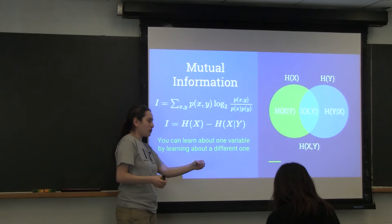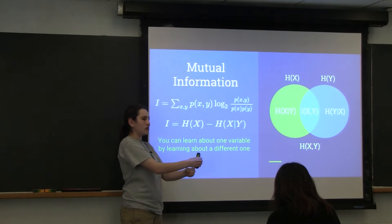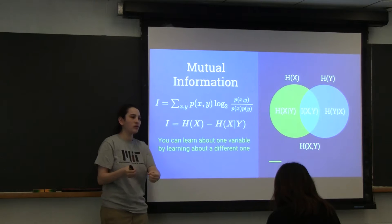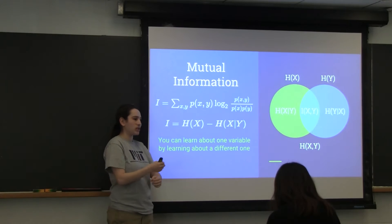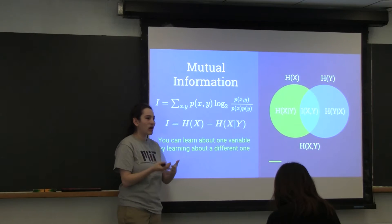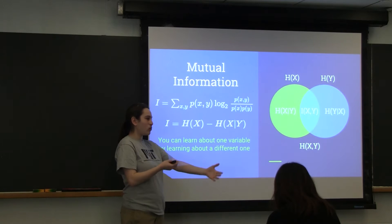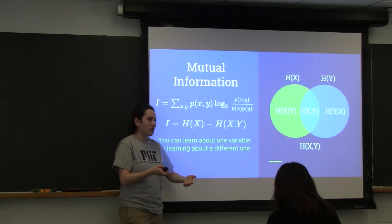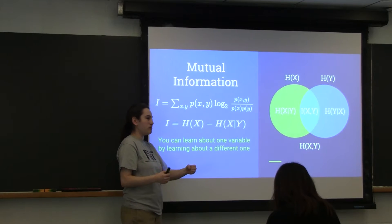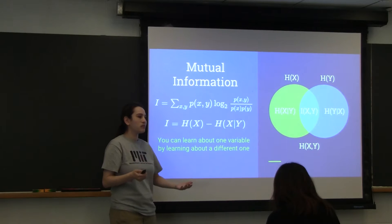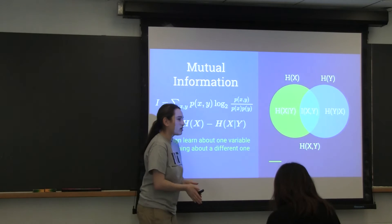You can also maybe infer some things about the locations adjacent to it. But similarly, if you know there's not a wall somewhere, you can infer some things about the locations adjacent because these are not completely independent. If there's one kind of object in one position, you can expect maybe the same thing in the adjacent places. And this is the idea of mutual information.